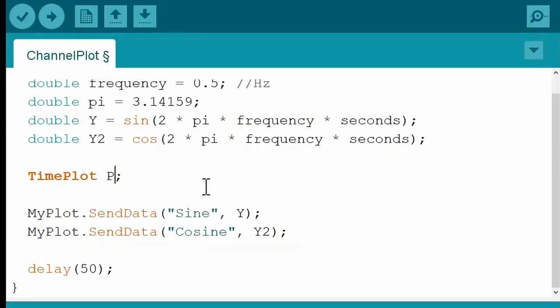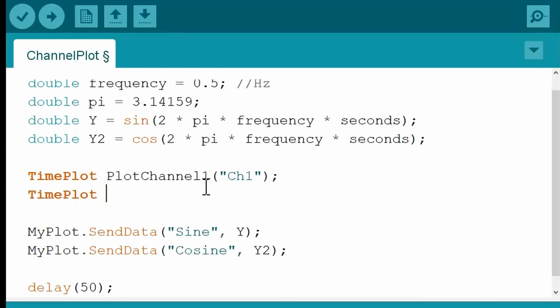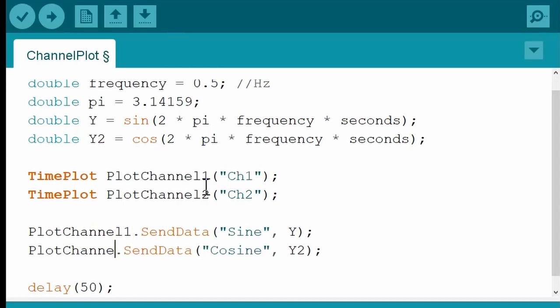Create a channel by supplying a name when you create the visualizer variable. So here, I'm using these two time plot variables, created with different channel names, to send the sine wave signal on one channel and the cosine wave on another.